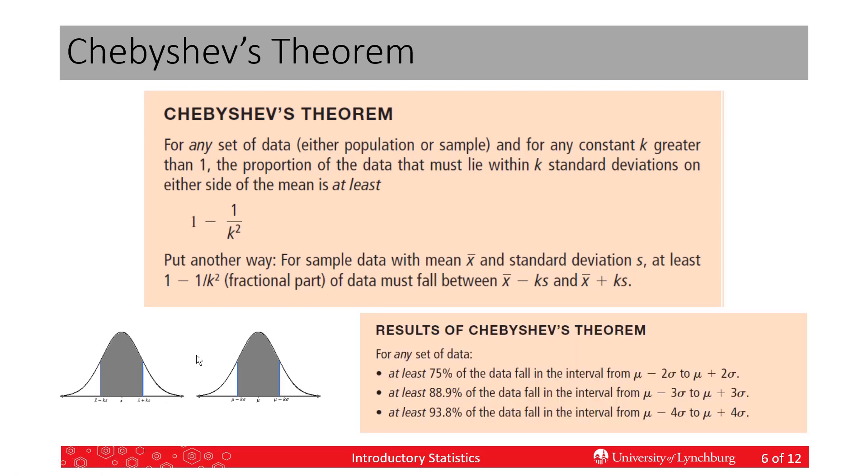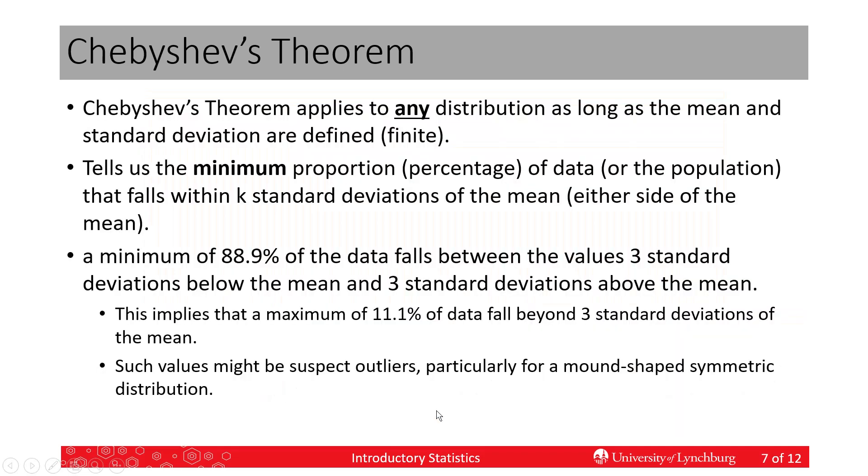So, now, another way to look at this is to say, for any data set, for any population, we have at least 75% of the data within two standard deviations. So, here, k is equal to 2, and then Chebyshev tells us that the minimum is 75%. Here, k is 3, and the minimum is 88%. k is 4, the minimum is 93.8%.